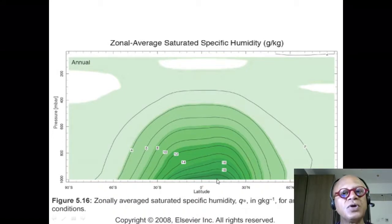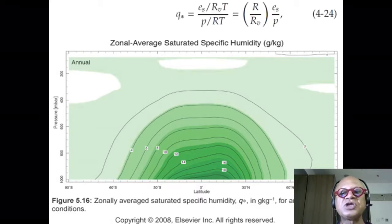So obviously, saturation, saturated specific humidity is going to be greater than mostly specific humidity because specific humidity depends on how much moisture is available, how much is being advected in, how much is being advected out, and so on and so forth. Saturated is potentially what it can hold if you had kept pumping moisture till it reached saturation.